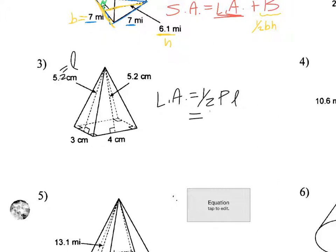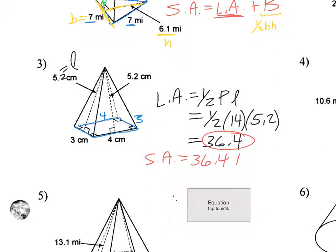So got 1/2. Perimeter to get perimeter. That's 4. That would be 3. That would be 4. And that would be 3. So if I add all those together, that's 6, 10, 14. So 14 and then 5.2. So if I do that, that's 36.4. Now do surface area, which is that number, 36.4 plus big B. Since B here is a rectangle, that again is length times width. So I've got 36.4 plus length here is 4. Width is 3. So 4 times 3 would be 12. Add that, and that's going to give me 48.4.